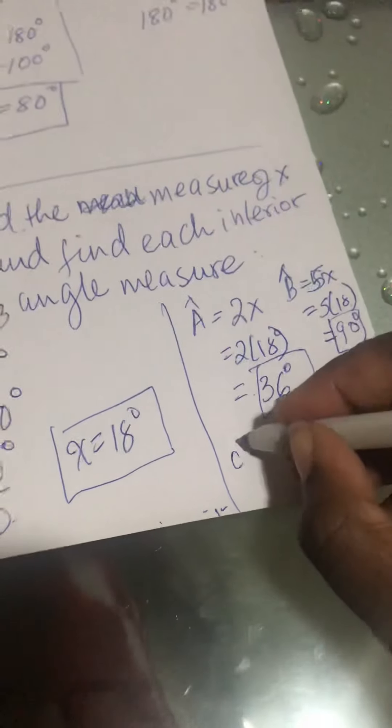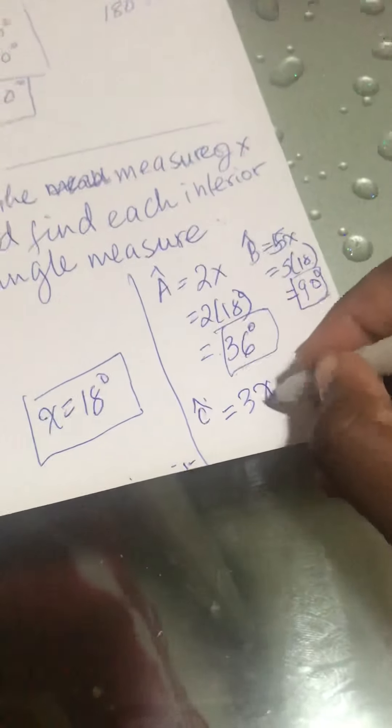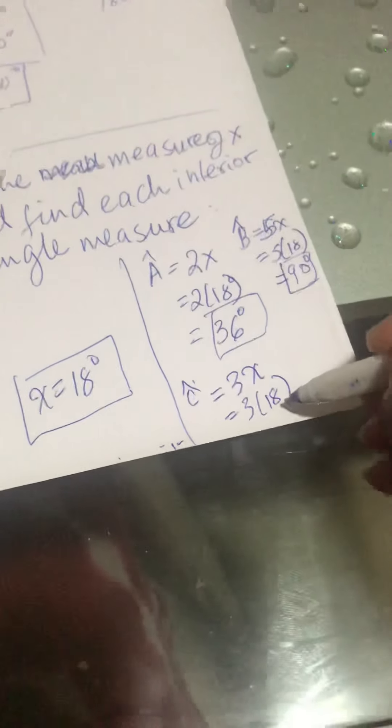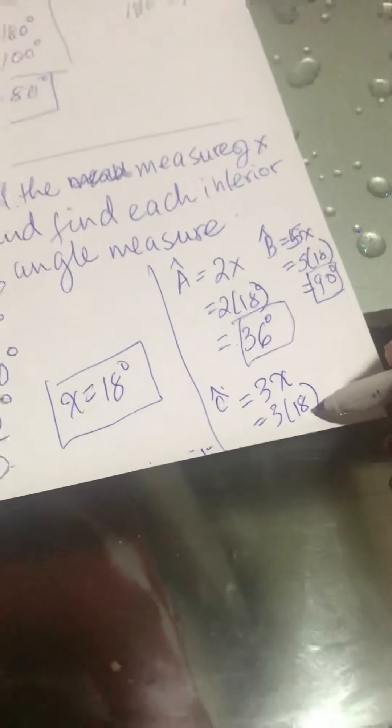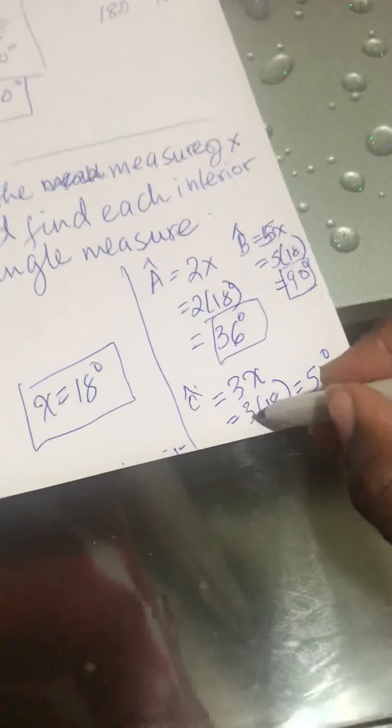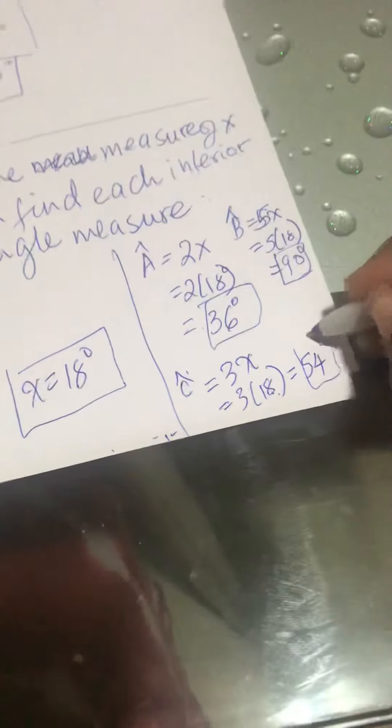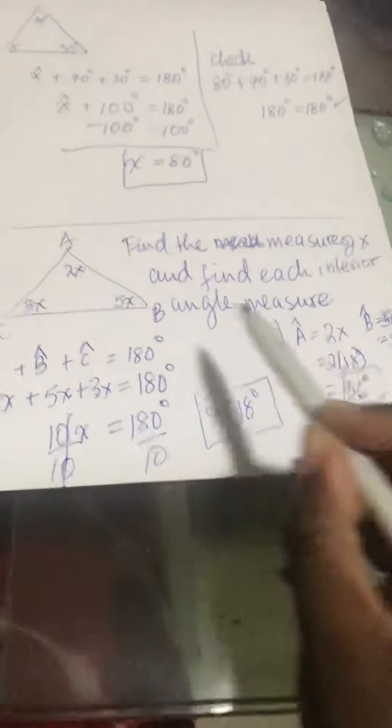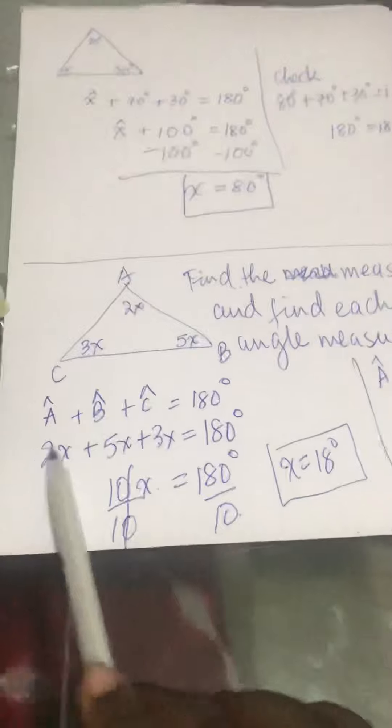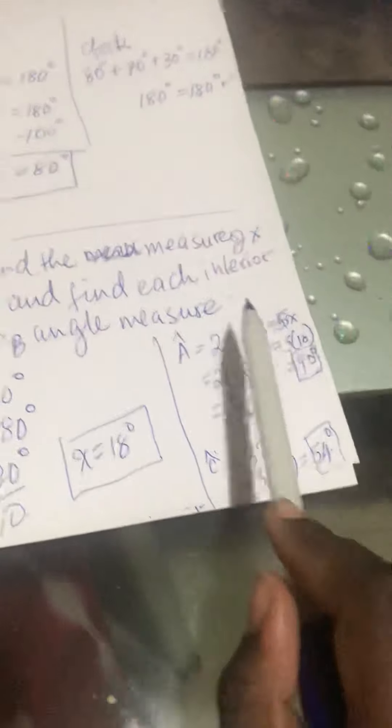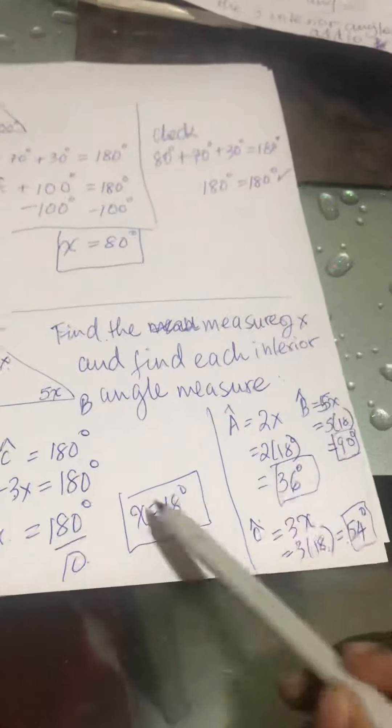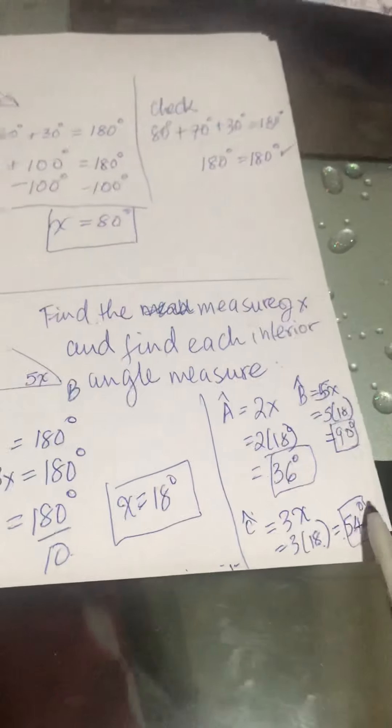Now I need to find angle C. Angle C is 3x, 3 times 18 should be 54 degrees. And there I have solved, using this picture, this question. I know that this angle should add up to 180 degrees. We have solved equations from before. There I have answered my question in a complete sense. I mean, I've answered all my questions completely, all the parts. So my answer—my question has four answers.